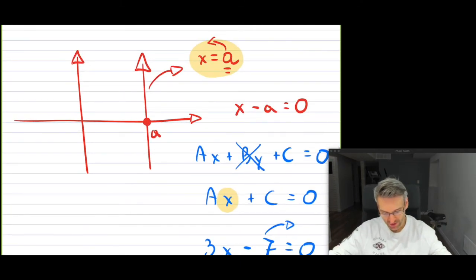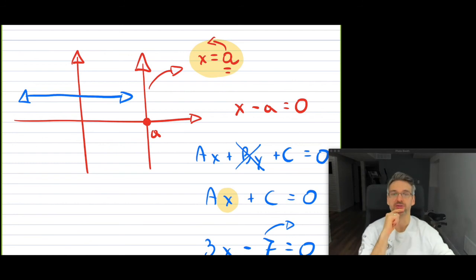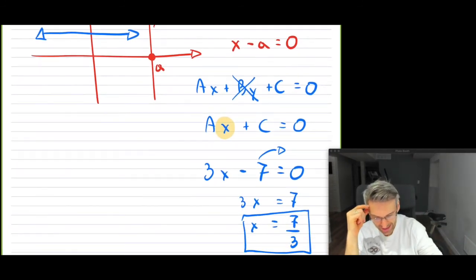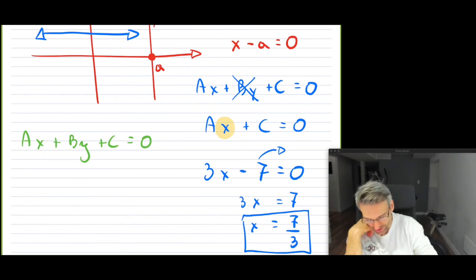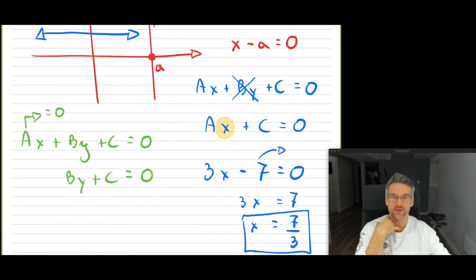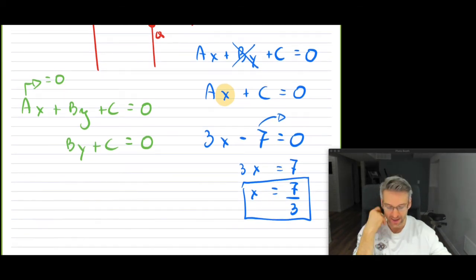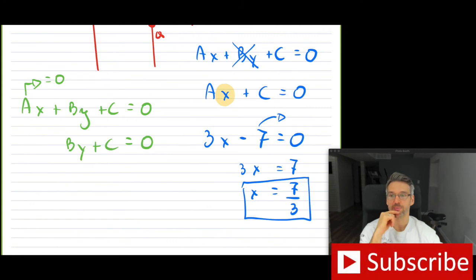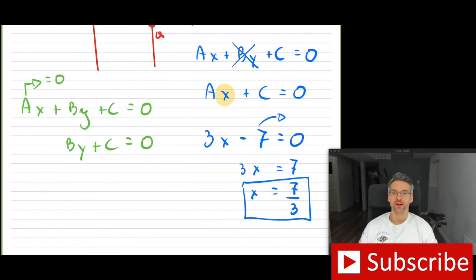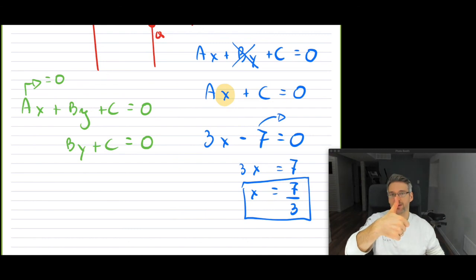For horizontal lines — where the line goes from left to right — in the equation AX plus BY plus C equals zero, your A is equal to zero. It becomes BY plus C equals zero. You can solve for Y to find exactly where it crosses the Y-axis; it has a flat, zero slope. That's what I wanted to mention about standard form. Hopefully this video helps. We'll see you in a future video — thank you for watching, and hit thumbs up if you liked it. Bye everybody.